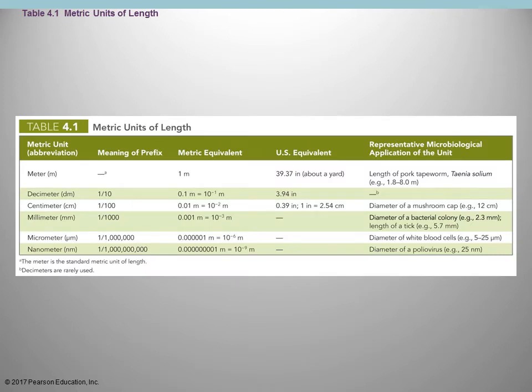Obviously we're working with very small things when discussing anything in microbiology. Just to put a point of reference, a quick review on the metric units of length. The basic unit in the metric system is a meter — about 39 inches. Everything is base 10: a decimeter has 10 per meter, a centimeter has 100, a millimeter has 1,000, and a micrometer has one million per meter.